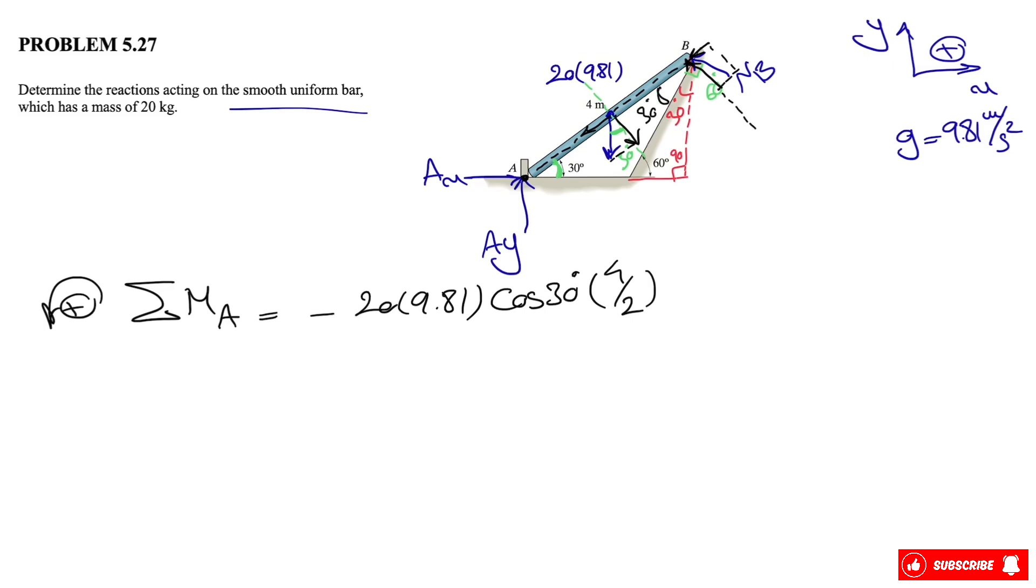And if you look at NB, I'm going to show it like that, so we'll have these two components for NB. Again, the one that passes through A won't make any moment. And if you want to find another missing angle in here, we know this angle in here is also 30 degrees. And if you want to go for this right angle, that means this is 30 degrees.